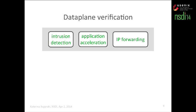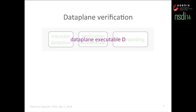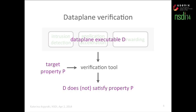What we need is data plane verification. We need to be able to take the binary executable of a software data plane, provide it as input into a verification tool, together with a target property — for instance, that this data plane will not corrupt a packet in a specific way — and the tool should tell us whether this data plane satisfies the target property or not. If we can do that, then we can retain the flexibility of software data planes but also make them predictable.